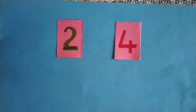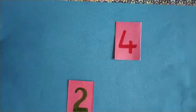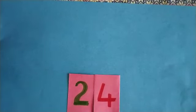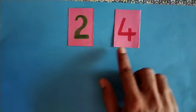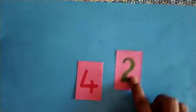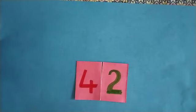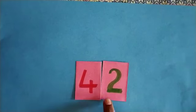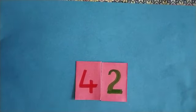One more example. 2 and then 4. 24, 2 digit number. Now change the order. Now which number is this? 42. This also 2 digit number.